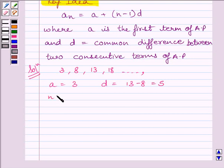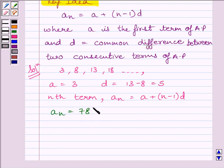We know nth term An is equal to A plus n minus 1 multiplied by d. Now, An is equal to 78. As we have to find which term of the AP is 78, we have to find the value of n in the given expression.